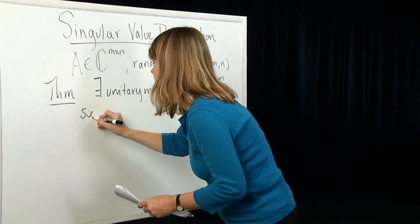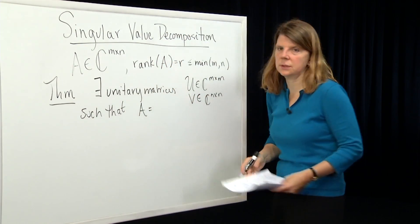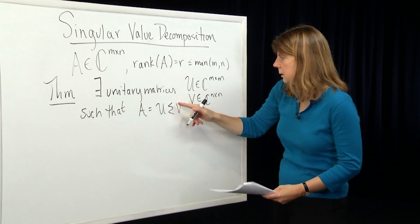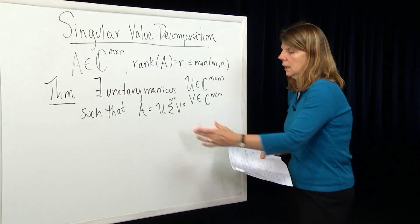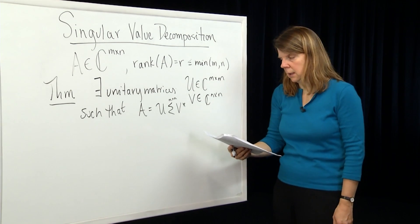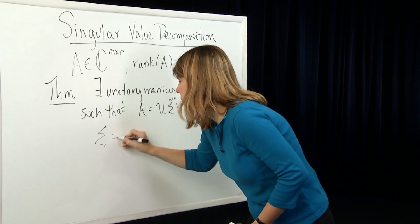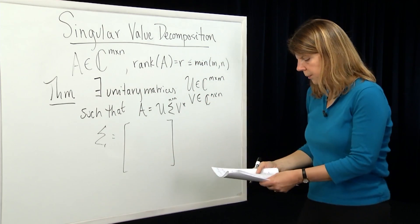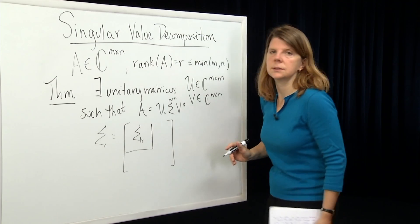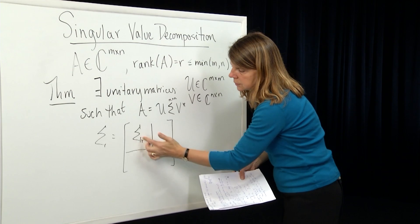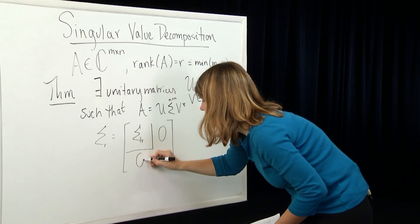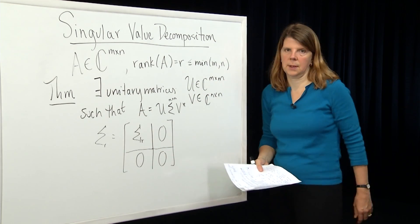Such that A can be decomposed into the product of three matrices: A = U Σ V*. Sigma is an m by n dimensional matrix — the same dimension as A — and U and V are square matrices of those dimensions, so the product is an m by n matrix equal to A. The upper-left part of Sigma is a square matrix, Σ_r, a diagonal matrix whose diagonal elements are related to the singular values of A: σ₁ up to σ_r. The rest of Sigma consists of zero matrices.